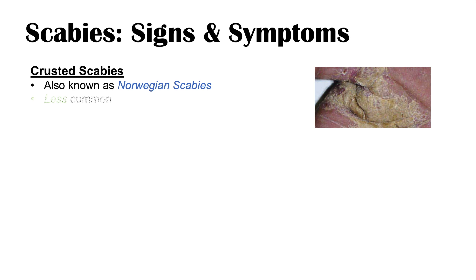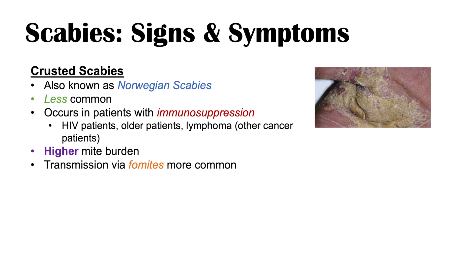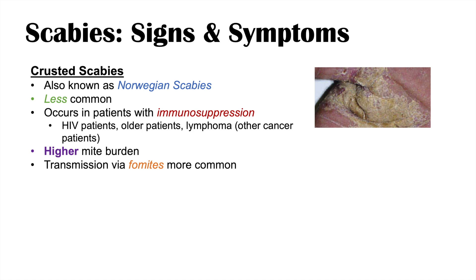The other type of scabies is crusted scabies, also known as Norwegian scabies. It's less common than classic scabies and occurs in patients with immunosuppression — HIV patients, older patients, and patients with cancers like lymphoma or on chemotherapy. Crusted scabies has a higher mite burden, and transmission via fomites is more common because more mites are left behind on surfaces. Hands, feet, and the scalp are where crusted scabies typically affects individuals.